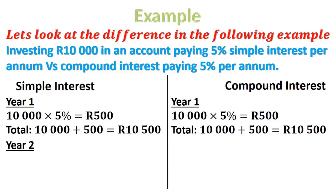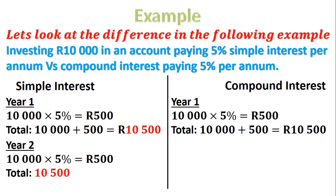For year two with simple interest, we take our 10,000, multiply by 5%, and we get 500 Rand again. For our grand total, we take this time our 10,500 — the end amount of year one — add our 500 Rand interest, and that gives us a grand total of 11,000 Rand.